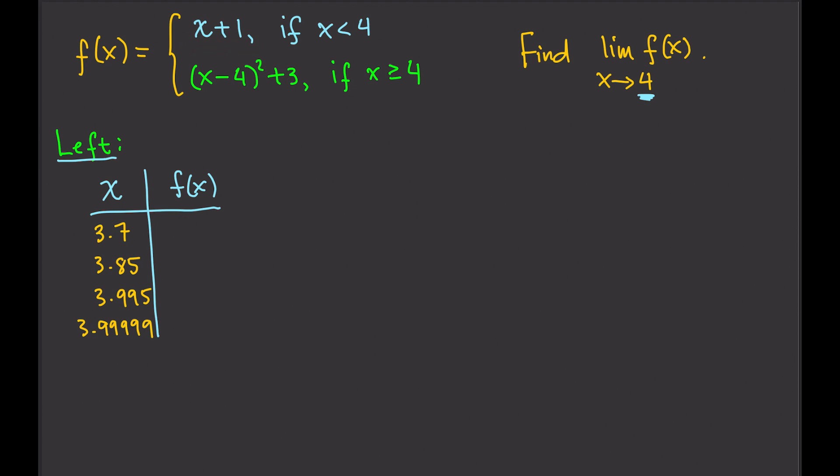So 3.7 plus 1, that's going to give us 4.7. This is going to be 4.85, 4.995, and then here this is 4.99999. So as x approaches 4 from the left, f of x approaches 5. And so the limit of f of x as x approaches 4 from the left equals 5. We are going to take note of that.